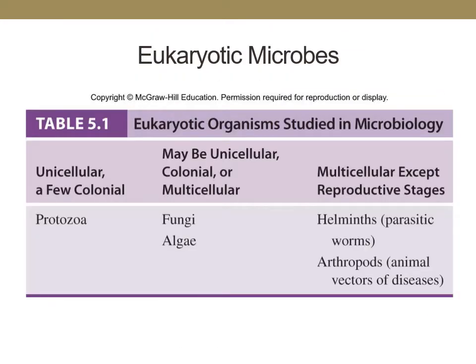The eukaryotic microbes studied in microbiology are the protozoa, which are unicellular organisms. Some protozoa can grow and form colonies like bacteria. Fungi and algae are also microbes studied in this course. They may be unicellular or form colonies like bacterial cells, and may also form multicellular structures that are macroscopic, visible to the naked eye. Helminths, which are the parasitic worms, and arthropods — insects that transfer microbes from one organism to another, like mosquitoes — are multicellular, except during their reproductive stages when they are unicellular.